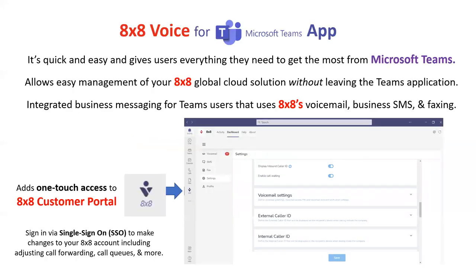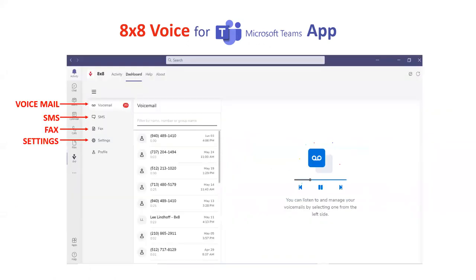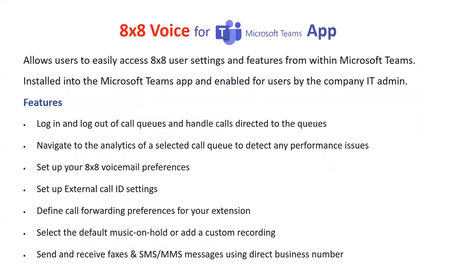8x8 Voice for Microsoft Teams is a relatively new app that gives you quick and easy access to everything you need from 8x8 within the Microsoft Teams interface. Within Teams, there's a one-touch 8x8 customer portal that lets you do anything in the phone system from within Teams as part of single sign-on. At a glance, you see voicemail, SMS, faxes, and your settings button. It allows users to log in and out of call queues, handle calls, navigate analytics, set voicemail preferences, change passwords, update external caller ID, define call forwarding, set music on hold, and send and receive faxes, SMS, and texts using your direct business number.